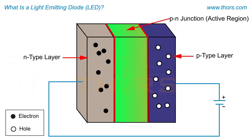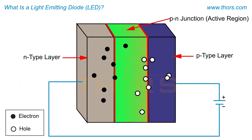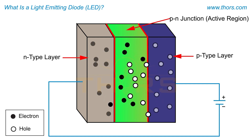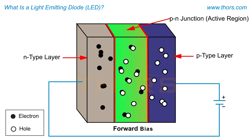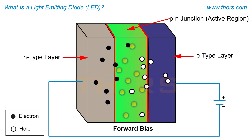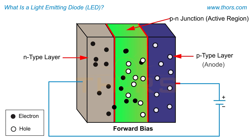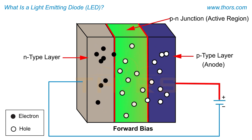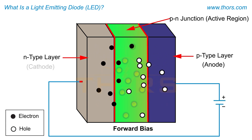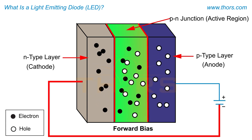To make an LED conductive, a certain voltage is required in the forward direction, also known as forward bias. In the forward bias condition, the anode is connected to the positive terminal of the battery, and the cathode is connected to the negative terminal.